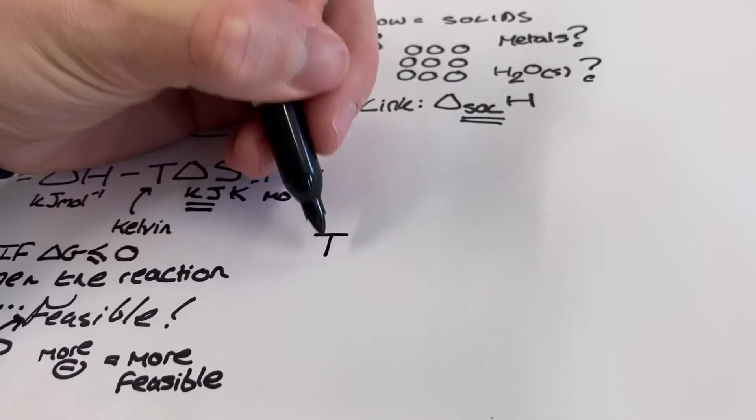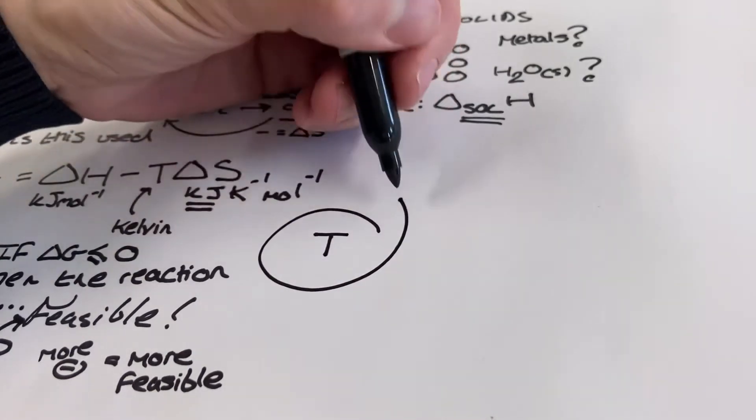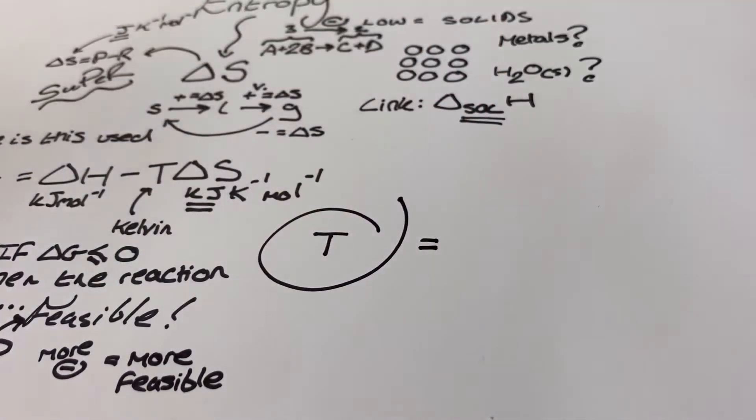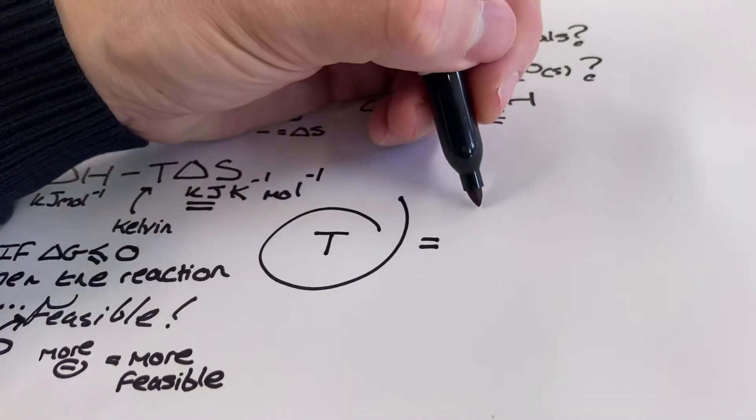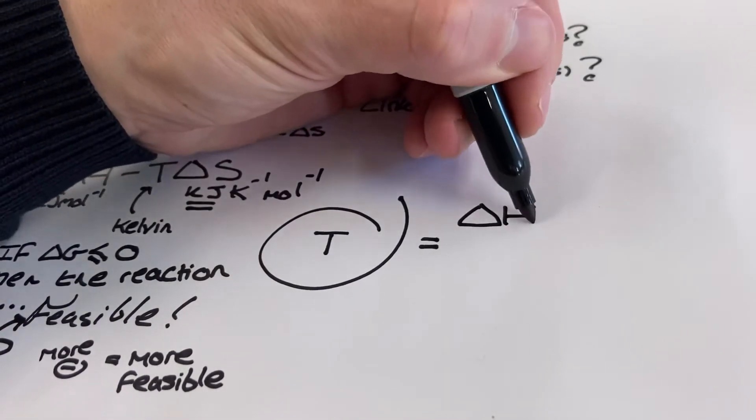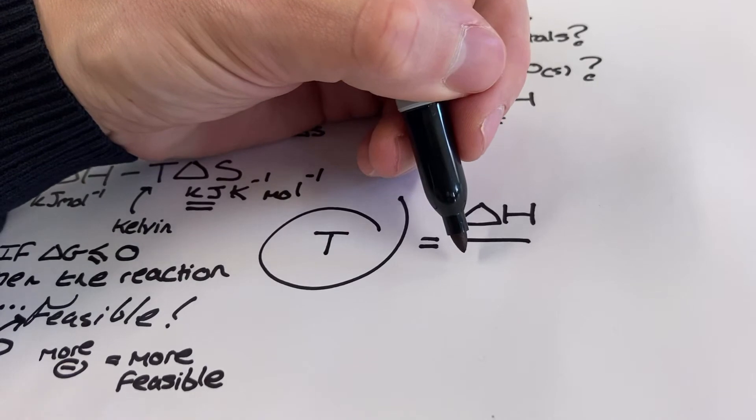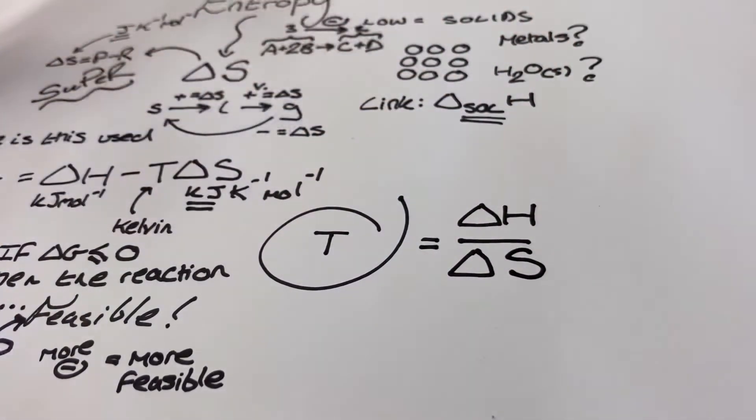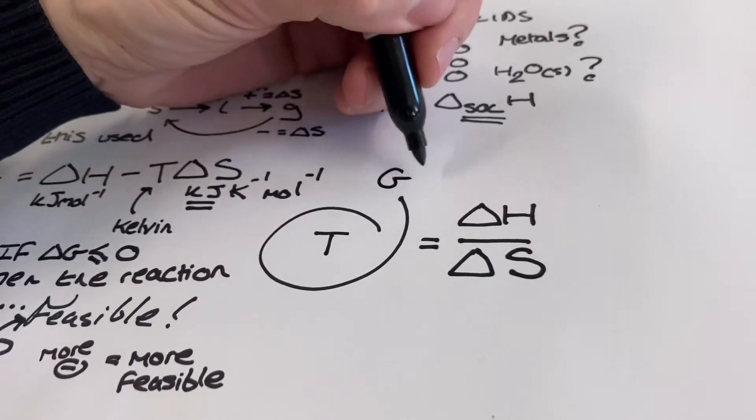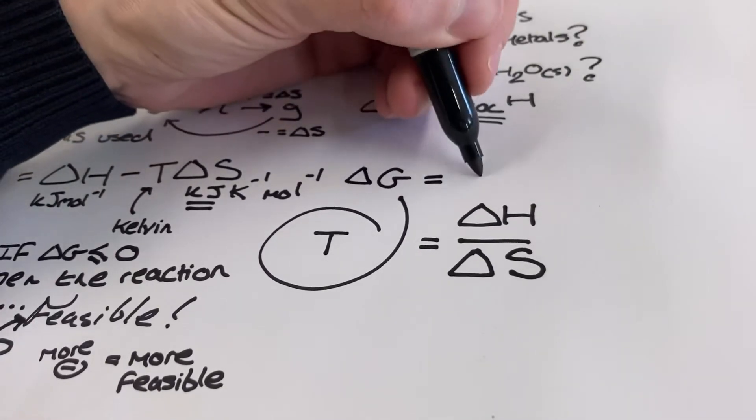So we've just learned that using the Gibbs equation, we can determine whether a process is feasible or not. When ΔG is less than or equal to zero, our reaction is feasible. And a positive ΔG means our reaction is not feasible. Now it could be down to the temperature. And so sometimes if we raise or lower the temperature, we can change the feasibility of the reaction.